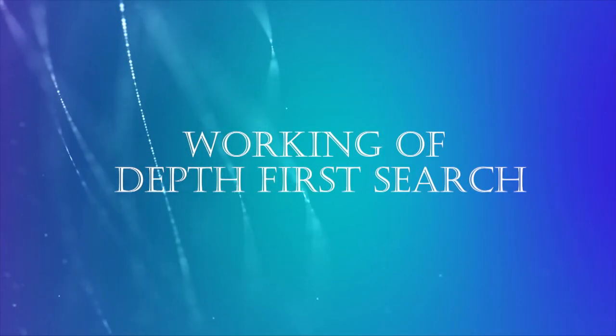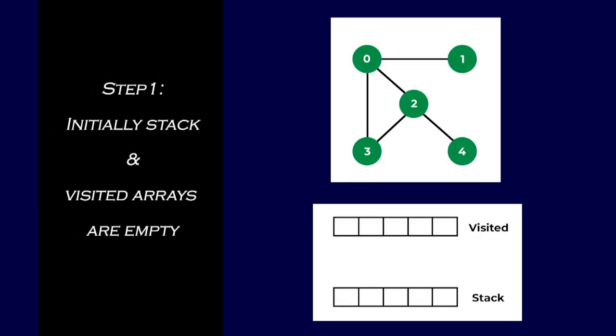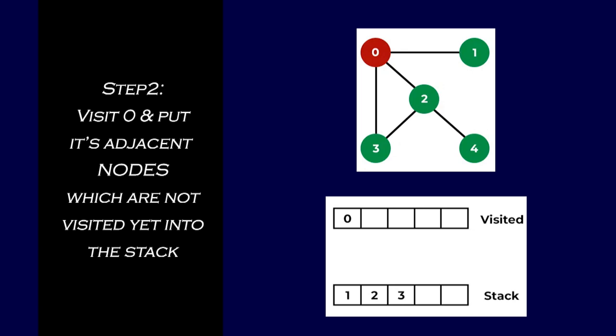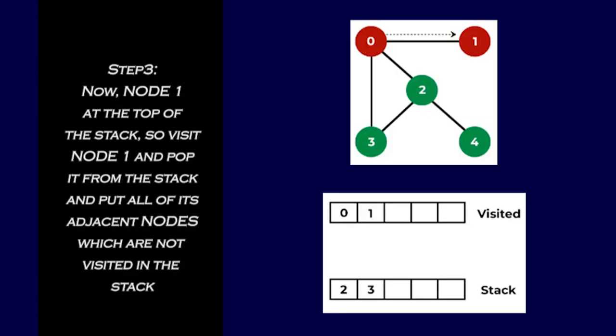How does DFS work? Depth first search is an algorithm for traversing or searching tree or graph data structures. The algorithm starts at the root node and explores as far as possible along each branch before backtracking. Let us understand DFS with the following illustration. Step one: the stack and visited array are initially empty. Step two: visit node zero and put its adjacent nodes — one, two, three — which are not yet visited, into the stack.